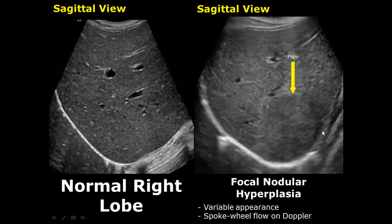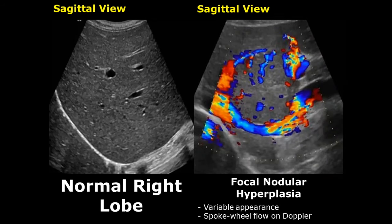Focal nodular hyperplasia is another benign lesion of the liver. It can have variable appearance — it can be isoechoic or hypoechoic. Its main feature on Doppler is the spoke wheel appearance. When we apply Doppler, we will have this type of flow which resembles a spoke wheel, and this is a feature of focal nodular hyperplasia.